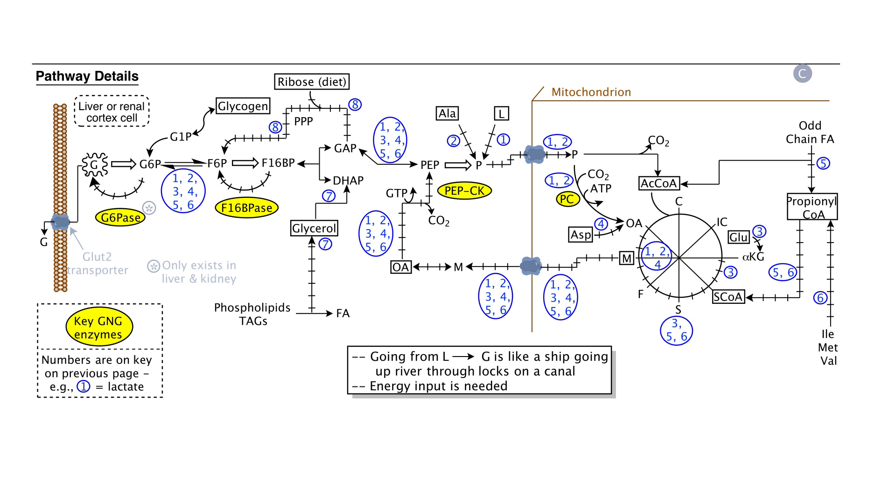Lastly, precursor number 8 is ribose. We mainly obtain ribose from our diet. In the next lecture, I'm going to cover the pentose phosphate pathway. In this pathway, ribose from the diet will enter what I call the quote-unquote carbon scrambling phase of the pentose phosphate pathway. Ribose goes into the carbon scrambling phase of the pathway, and GAP, or glyceraldehyde-3-phosphate, and fructose-6-phosphate come out. Both of these molecules, GAP and fructose-6-phosphate, will flow from right to left all the way to glucose in the pathway that I've drawn out in panel C. Hence, ribose is a good gluconeogenic precursor.